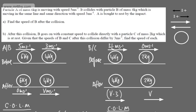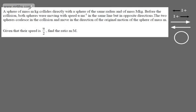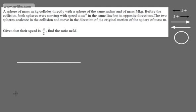Let's look at another one. A sphere of mass m kilograms collides directly with a sphere of the same radius and mass M kilograms. Before the collision, both spheres were moving with speed u meters per second in the same line but in opposite directions. The two spheres coalesce and move in the direction of the original motion of the sphere of mass m. Given their speed is u/2, find the ratio m to M.